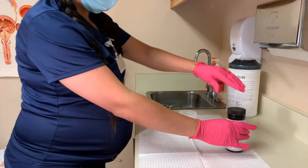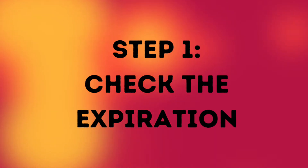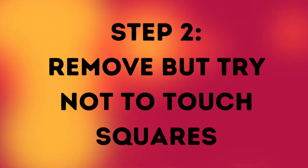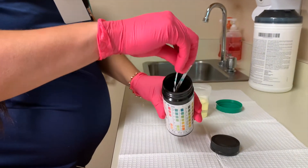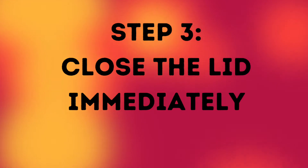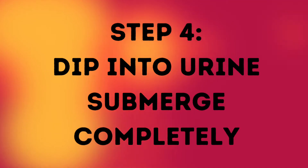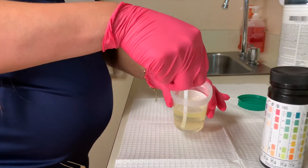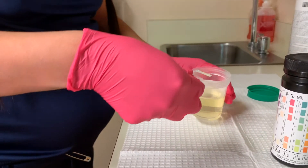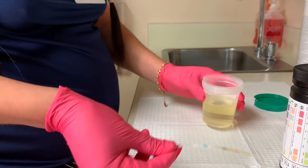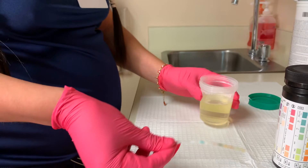After you've urinated in a cup, wear some gloves. Step one: make sure that your test kit hasn't expired. Step two: take one out of the container and try not to touch the reagent squares with your finger. Step three: close the lid immediately to prevent oxidation. Step four: dip the urine sample and make sure all the squares get submerged in the urine. Step five: remove it immediately and then tap off any extra urine. Try to hold the stick horizontally and not vertically, otherwise it might cross contaminate the reagents and bleed onto the other squares.